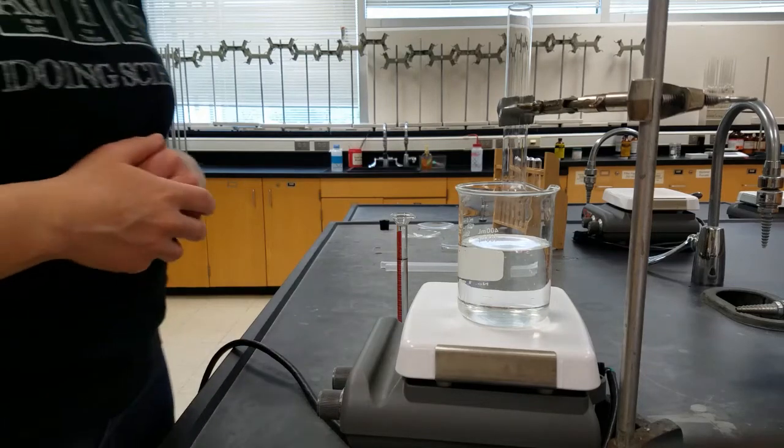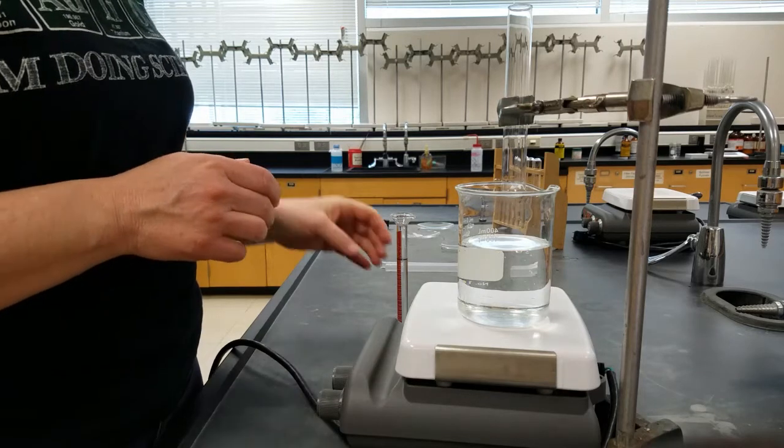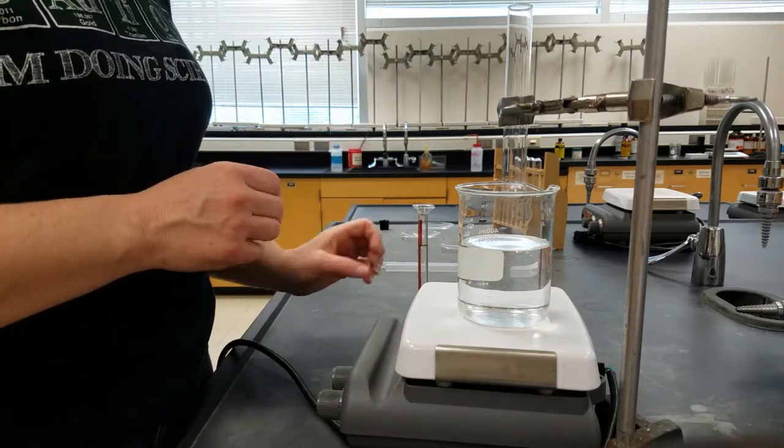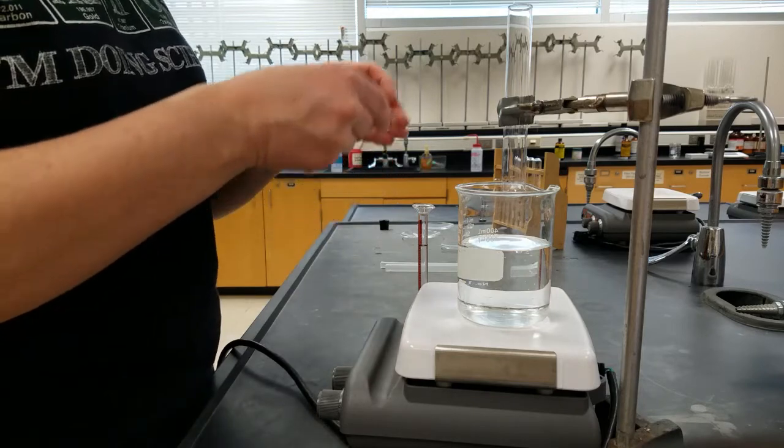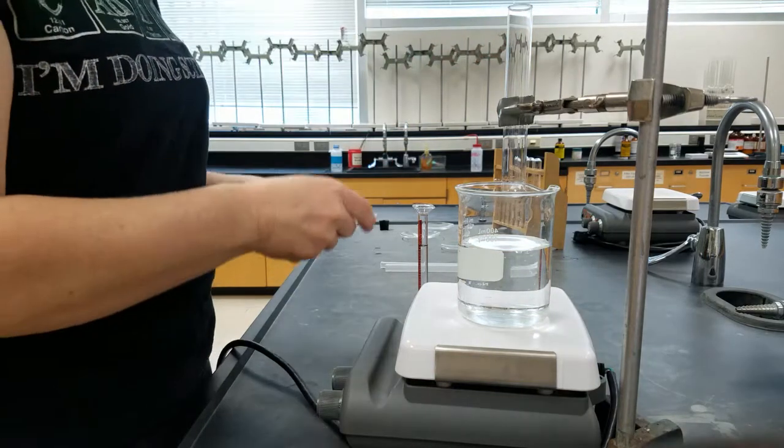Another physical property that we're going to use for the unknown liquid along with our density is boiling point. And so we're going to assemble our apparatus. We want to put a couple of boiling chips into a clean dry test tube.